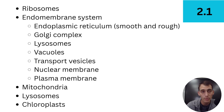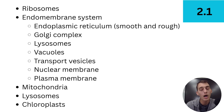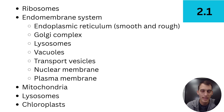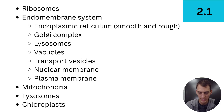We're going to start with ribosomes, then talk about the endomembrane system, which includes the endoplasmic reticulum — both smooth and rough — the Golgi complex, lysosomes, and vacuoles. We'll also talk about transport vesicles and briefly discuss the nuclear membrane. Later topics will get into the specifics of the plasma membrane. And then at the end of the video, we'll get into mitochondria, lysosomes, and chloroplasts.